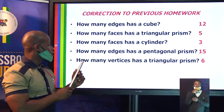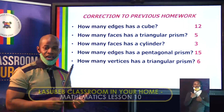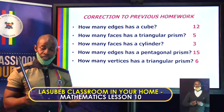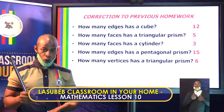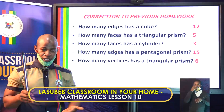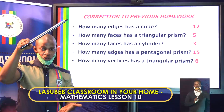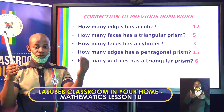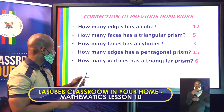The third question says how many faces has a cylinder? A cylinder is a prism so it has one face at the base, one face at the bottom, and one face around it, so that makes three faces.